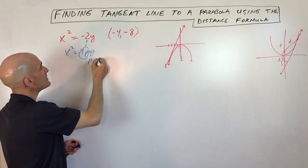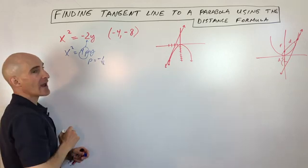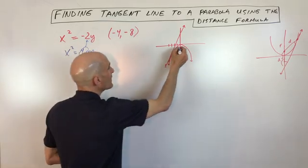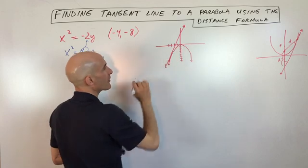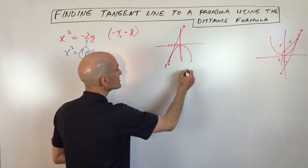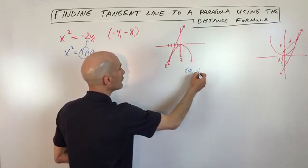So that means that p equals negative 1 half. So if we go down here, this is going to be negative 1 half right there. That's our focus. So the focus is at zero comma negative 1 half.